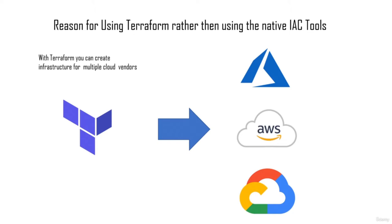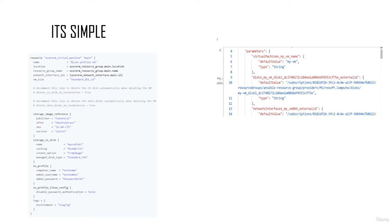If you're a DevOps engineer, it's imperative to learn a tool like Terraform, which gives you a more holistic view of creating infrastructure compared to native IaC tools. Another important factor is simplicity — Terraform is specifically built for creating infrastructure, whereas CloudFormation or Deployment Manager are very complex and require many more lines of code. Looking at a code comparison, a Terraform configuration to create a virtual machine in Azure is significantly shorter than the equivalent ARM template.